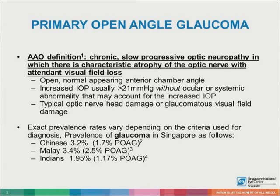The exact prevalence rates vary depending on the criteria used for diagnosis. In Singapore, the prevalence of glaucoma is 3.2% in the Chinese population, 3.4% in the Malay population, and 1.95% in the Indian population, with attendant prevalence of primary open angle glaucoma being 1.7%, 2.5%, and 1.17%, respectively.